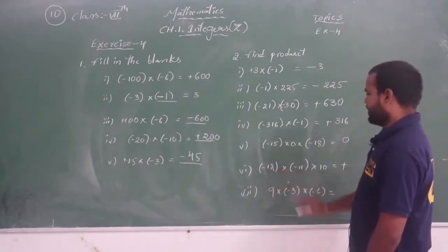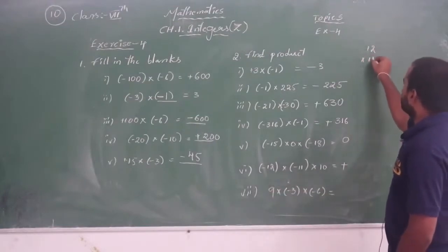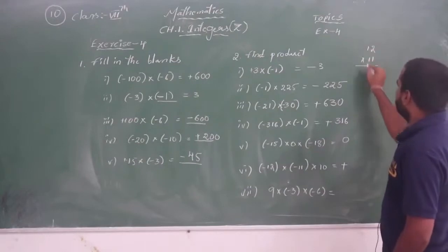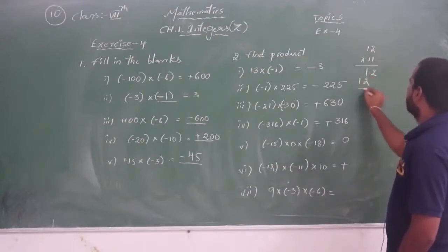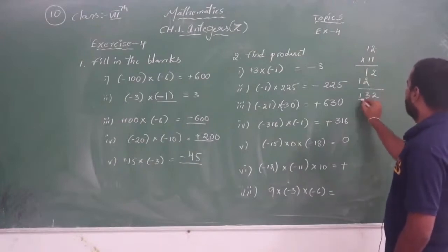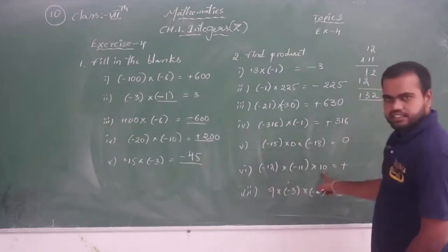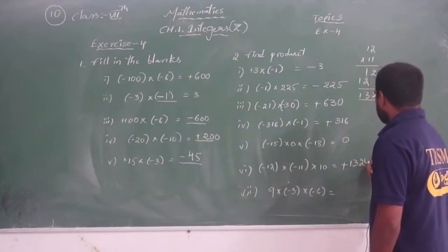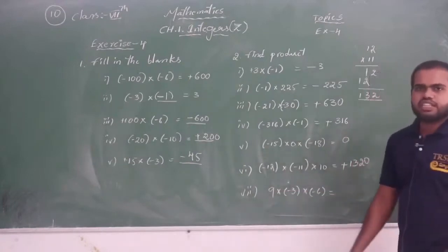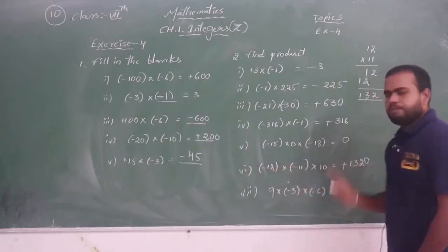Now see the next: 12 into 11 into 10. 12 into 11 — 1 two is 2, 1 one is 1, 1 two is 2, 1 one is 1 — so 12 into 11 is 132. With 10 multiplied, it becomes 1320. Since minus into minus is plus and plus into plus is plus, the final product is plus 1320.